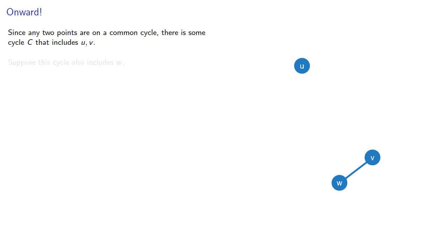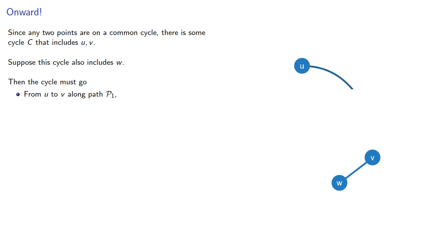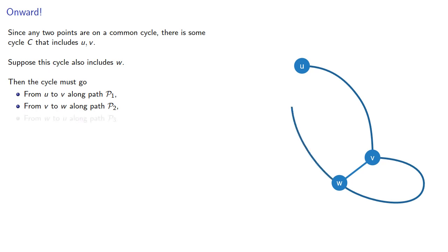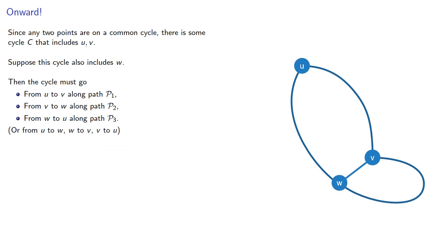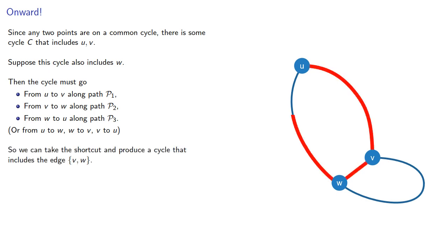Now suppose this cycle also includes w. Then the cycle must go from u to v along some path, from v to w along some path, and from w to u along some path, or some permutation of this. But since there's an edge that joins v and w, we can take a shortcut and produce a cycle that includes the edge.